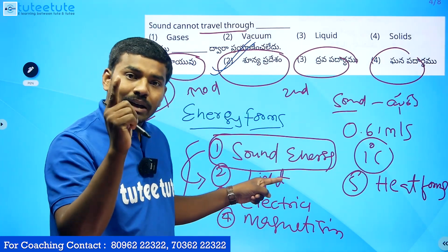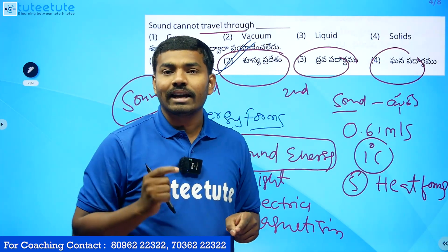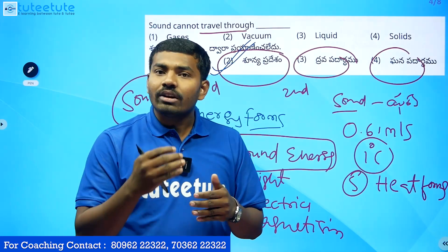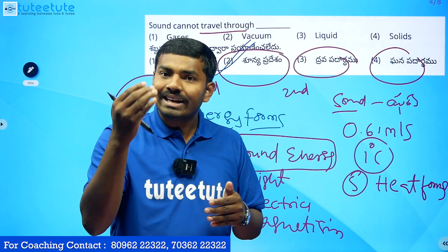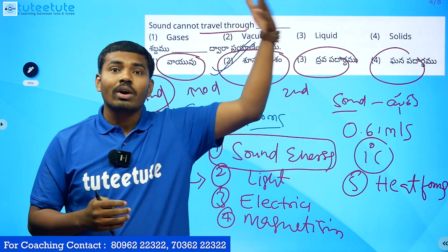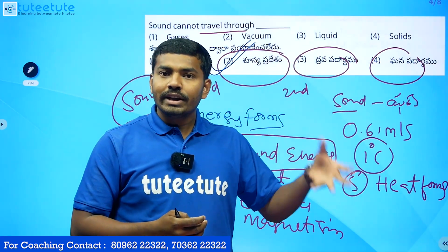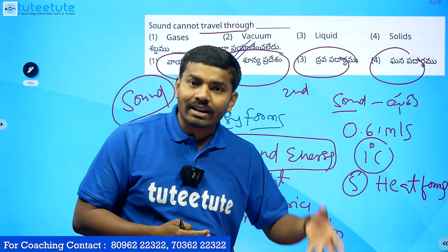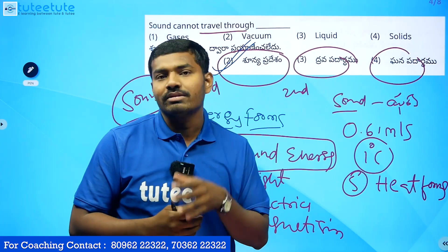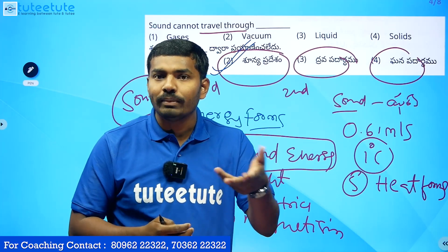Light energy travels through vacuum. Why? Because light consists of electromagnetic waves. Our solar energy travels 150 astronomical units of distance in the form of electromagnetic waves. The speed of light is 3 × 10⁸ meters per second.